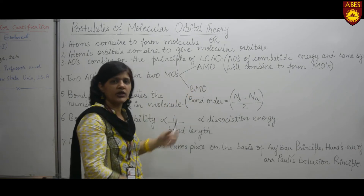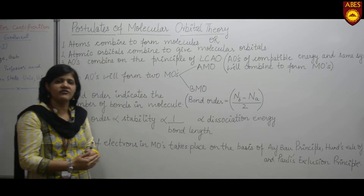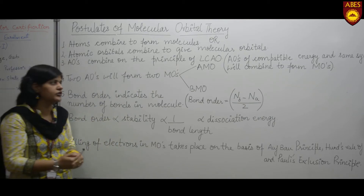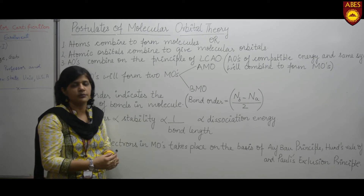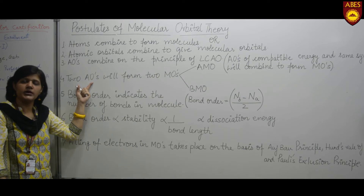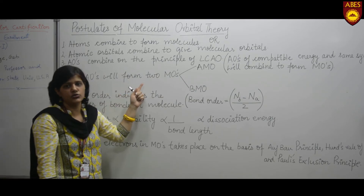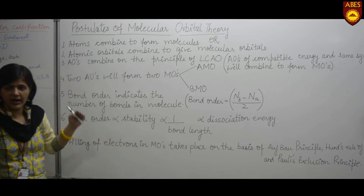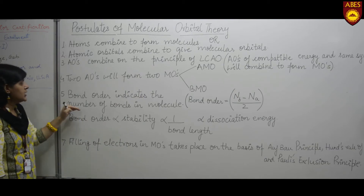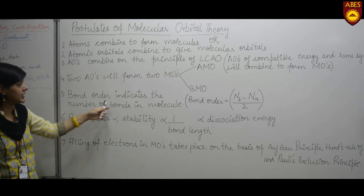If three atomic orbitals combine, they give three molecular orbitals: one bonding, one anti-bonding, and one non-bonding orbital. If four atomic orbitals combine, they give four molecular orbitals: two bonding molecular orbitals and two anti-bonding molecular orbitals. Bond formation is indicated by the bond order, which indicates the number of bonds formed in a molecule.